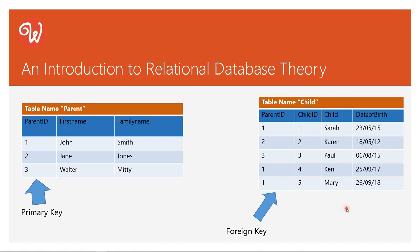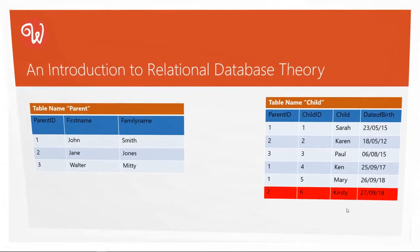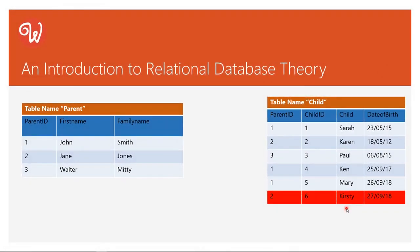More importantly, when we come to add another child we don't have to restructure. So Jane Jones has had a child called Kirstie — we can see her name and date of birth. Kirstie has been allocated her own unique ID, which will also be a primary key, and that is linked via parent ID so we know that Kirstie, child 6, born 27/9/18, is the child of Jane Jones. We've just had to add one simple record — no wasted space, one quick insert — and the relational model links them.